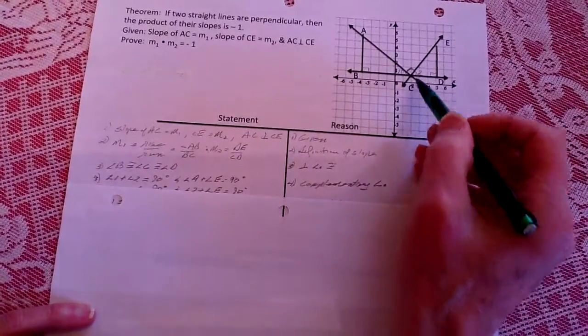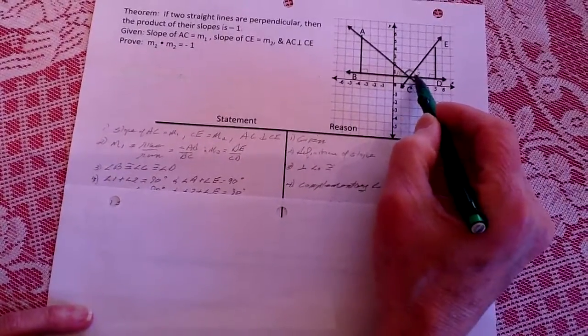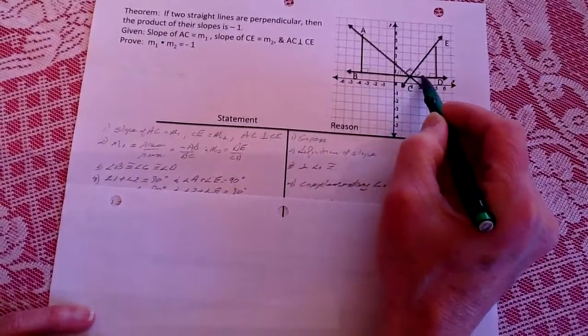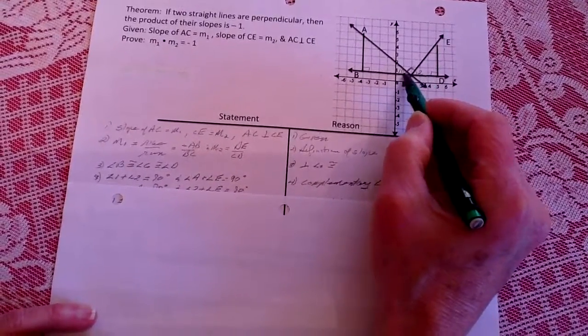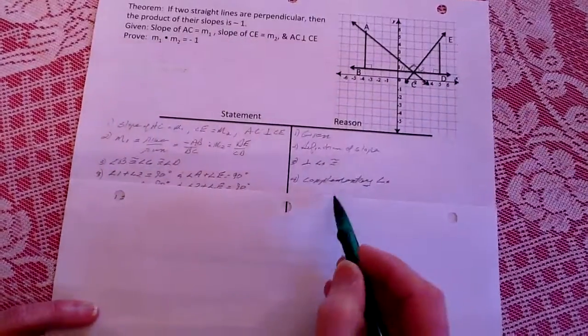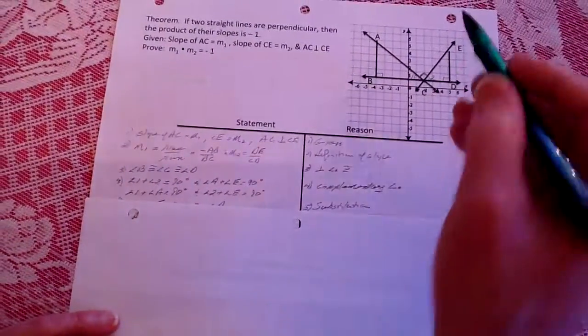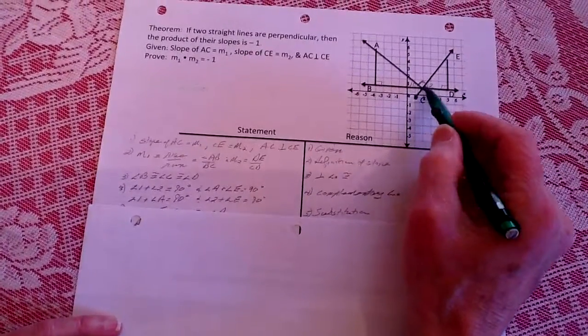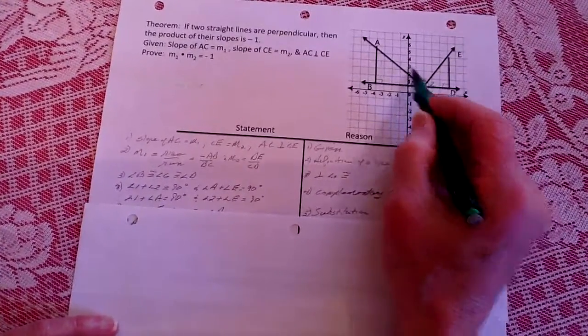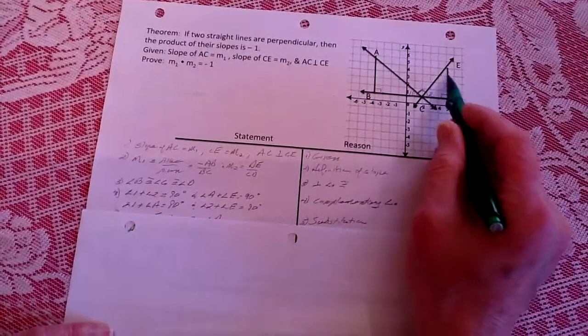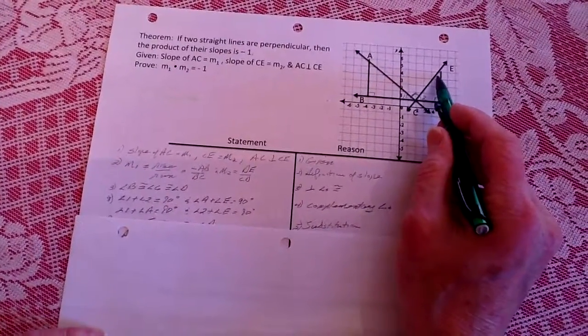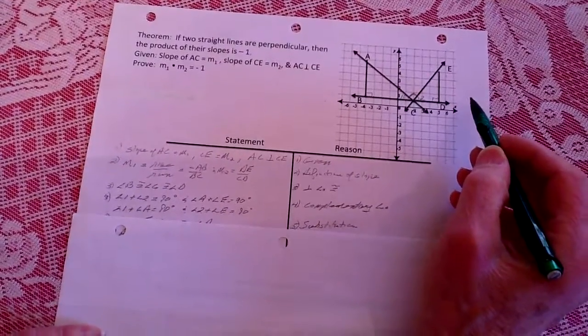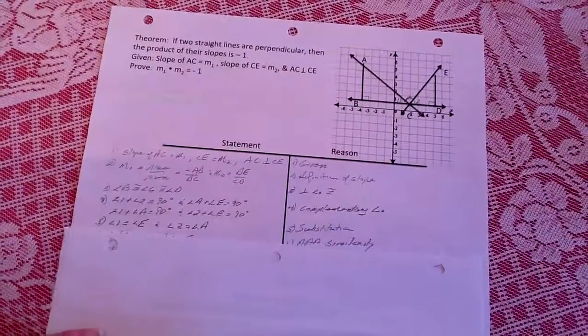So we know that these angles B, C, and D are all congruent because all perpendicular angles are congruent. And we also know that angle 1 and angle 2 is going to equal 90 degrees because we know that this line is 180 and this is 90, so these are complementary angles.